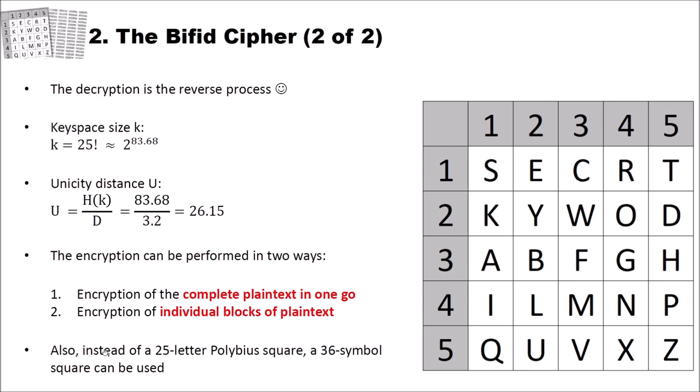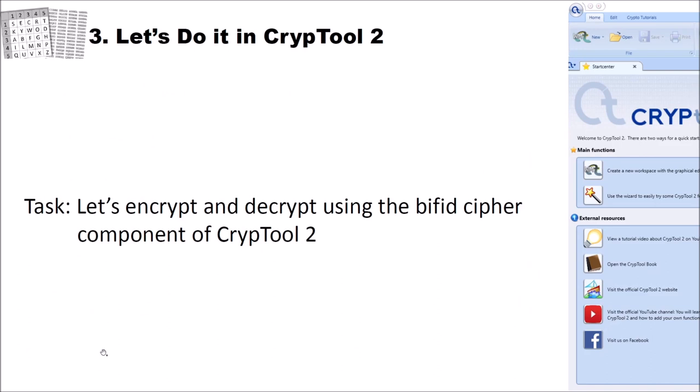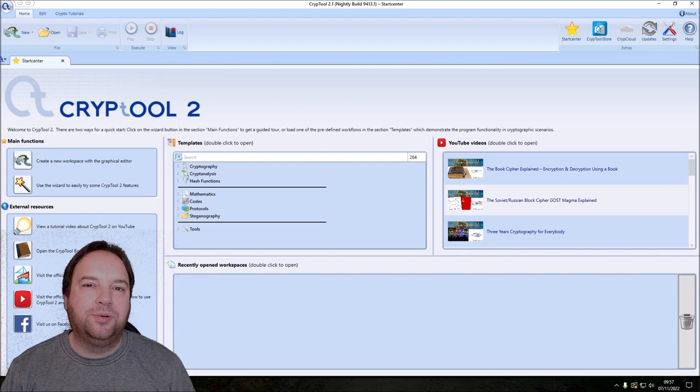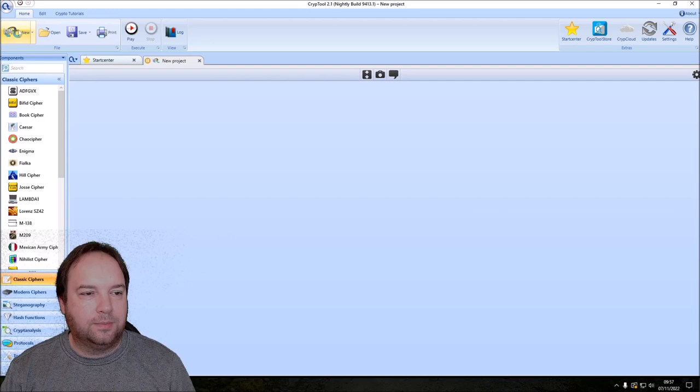Now that we know how the bifid cipher works, let's encrypt and decrypt using the bifid cipher component of CrypTool 2. I am here now in CrypTool 2, in the nightly build 9413.1, and I want to show you how you can use the bifid cipher. And to do so, we create a new workspace. In the new workspace, in the components section, we search for bifid cipher and drag and drop a bifid cipher component onto the workspace.